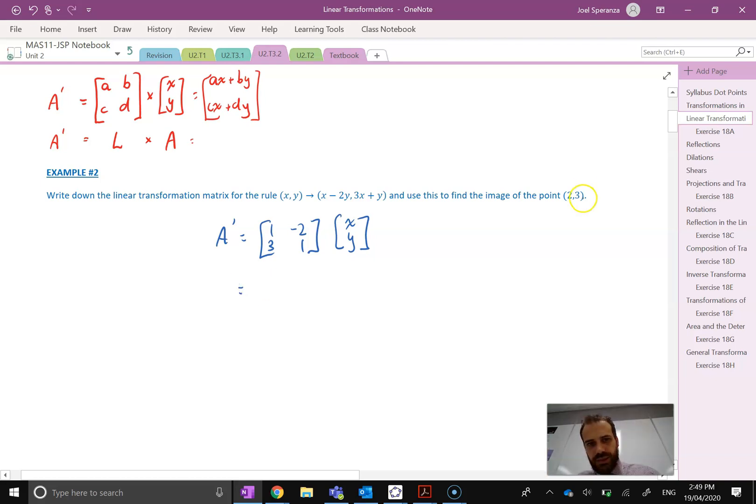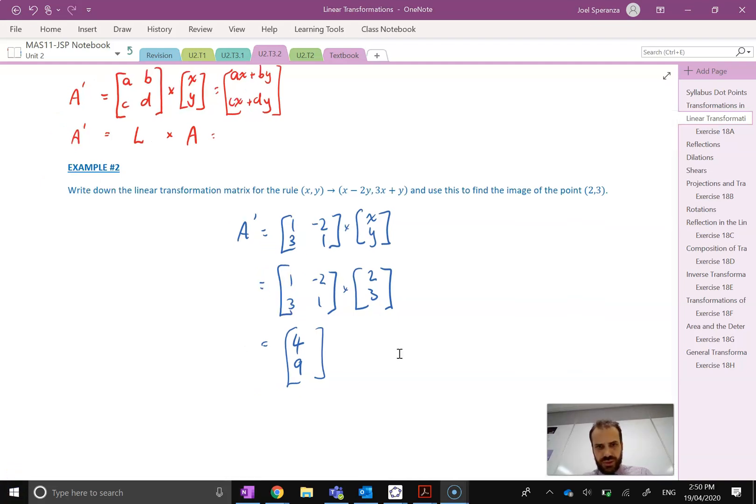We can now sub in the point (2,3). So 1 times 2 plus negative 2 times 3 is—I hope that's 4. And 3 times 2 plus 1 times 3, I hope that is 9. Pardon me, 1 times 2, negative 2 times 3, that's going to be negative 4.